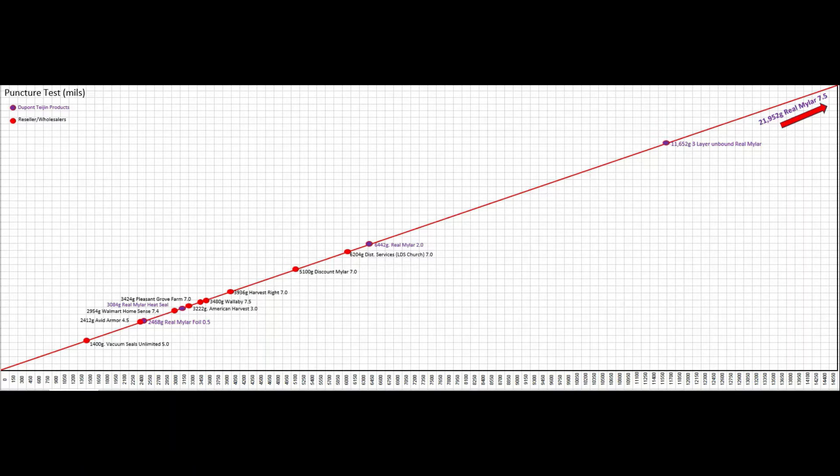This is a comparison of Avid Armor against other competing brands and against genuine Mylar. Avid Armor is right here, this little red dot at 2,412 grams. The little purple dots are genuine DuPont Mylar products. To give you an idea, real Mylar at 7.5 mil was able to endure 21,952 grams. And it's way off the scale. It would be way, way, way up here. A few mils of real Mylar came in at 6,442.